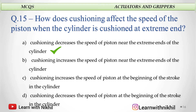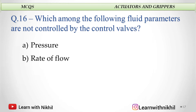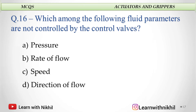Cushioning decreases the speed of the piston near the extreme ends of the cylinder, so it moves softly. Which among the following fluid parameters are not controlled by the control valves? A. Pressure, B. Rate of flow, C. Speed, or D. Direction of flow? And the answer is speed.